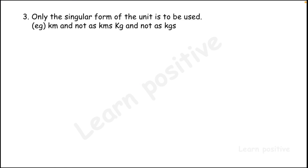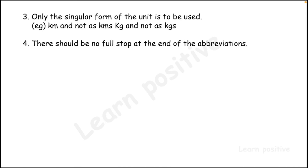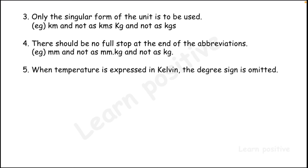The third convention: only the singular form of units is to be used — for example, kilometre 'km', not 'kms'; kilogram 'kg', not 'kgs'. The fourth: there should be no full stop after the symbol — write 'mm', not 'mm.' and 'kg', not 'kg.'